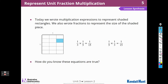Today we wrote multiplication expressions to represent shaded rectangles, and we also wrote fractions to represent the size of the shaded piece. How do you know these equations are true? We can see the shaded part of the diagram for both one-third times one-fifth of the whole and one-fifth times one-third of the whole. We can also see one-fifteenth, because the whole square is divided into 15 equal pieces and one of the equal pieces is shaded.